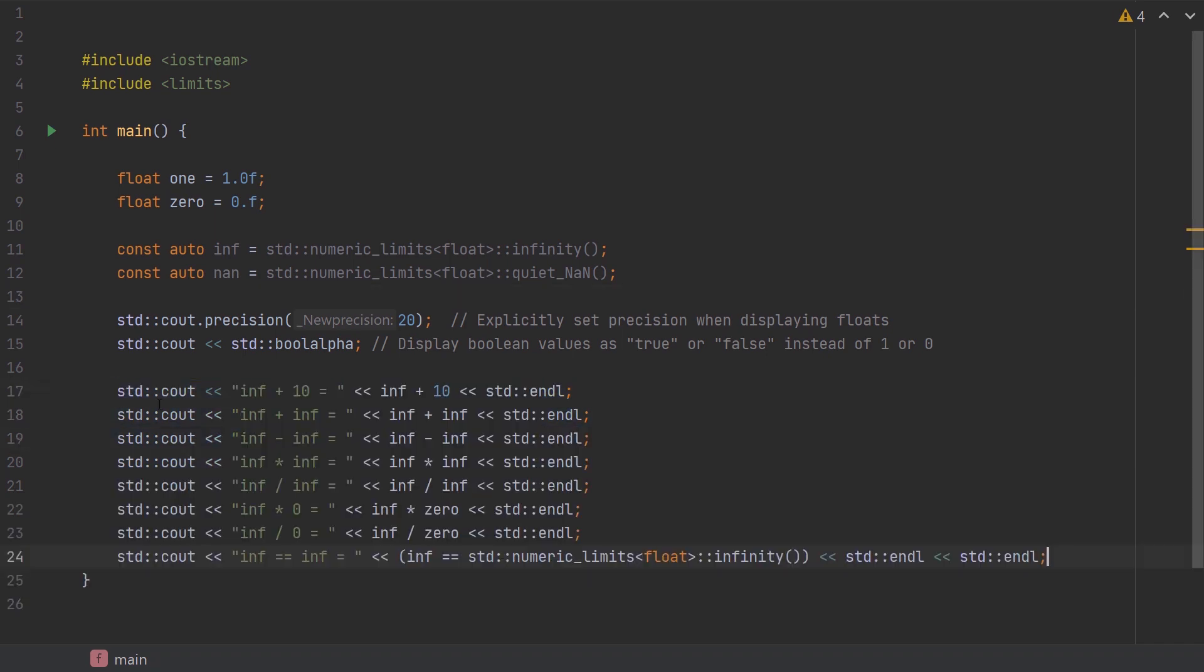Now there are certain properties in infinities and NaNs that are probably worth knowing. Check out these statements here. They're all involving infinities. You can add infinity to an arbitrary number, infinity plus infinity, infinity minus infinity, infinity times infinity, infinity divided by infinity, infinity times zero, infinity divided by zero. And then are two infinities equal?